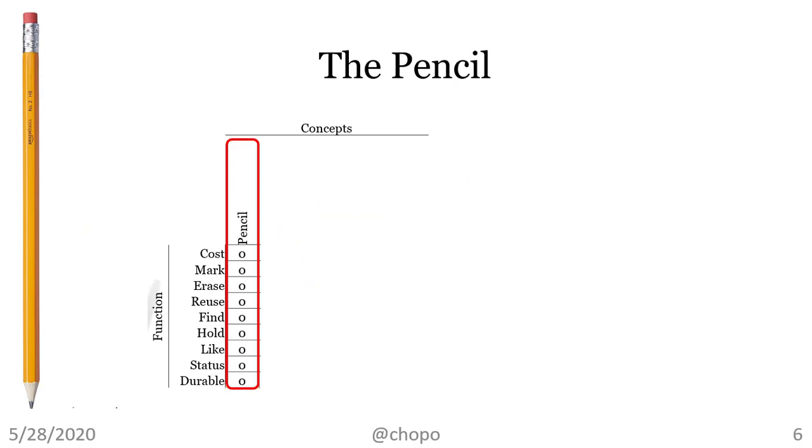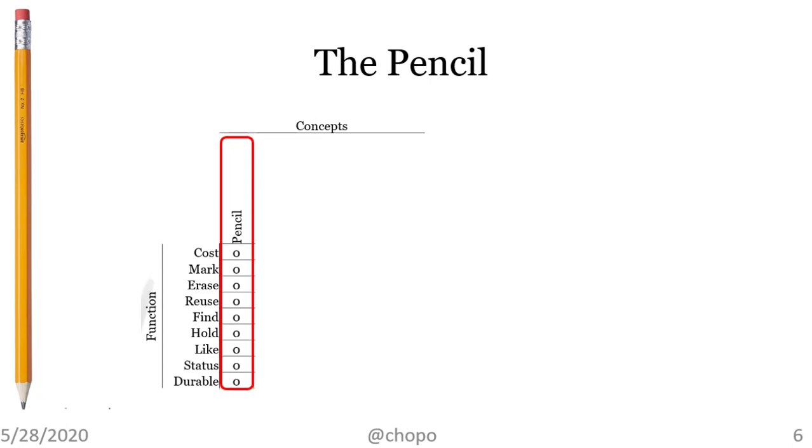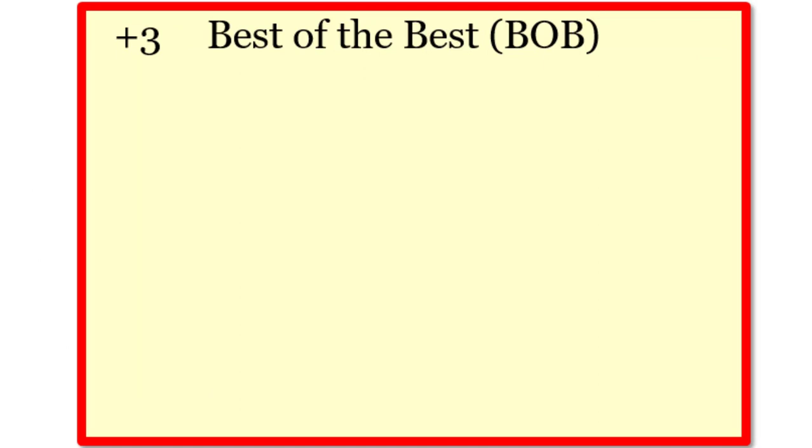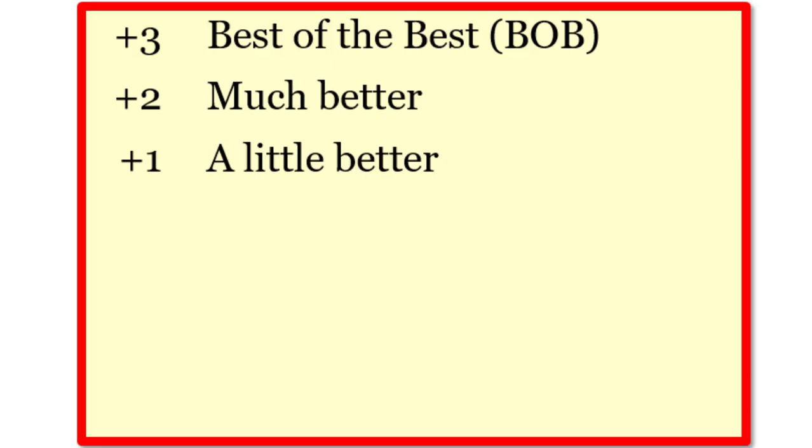The pencil is our datum. It is our fixed starting concept. Write zeros on all the functions for the pencil. Now, let's think about the scores. The scores will help us compare concepts. We will score three for the best of the best, call it Bob. Plus two is much better. Plus one is a little better. Zero is the same. Minus one is a little worse.